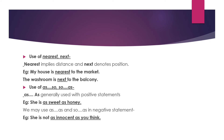Use of 'nearest' and 'next': 'nearest' implies distance and 'next' denotes position. For example, 'My house is nearest to the market and the washroom is next to the balcony.' Use of 'as...as' and 'so...as': 'as...as' is generally used with positive statements. For example, 'She is as sweet as honey.' We may use 'so...as' in negative statements: 'She is not as innocent as you think.'